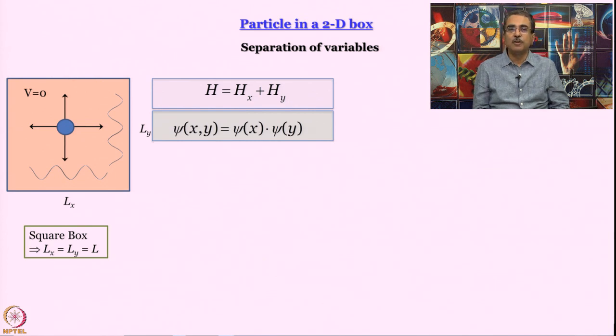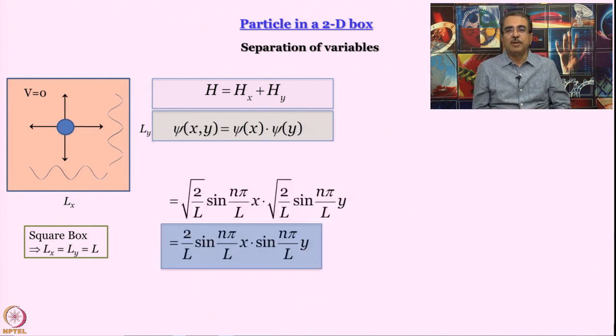Wave function is a product of psi of x and psi of y. The Hamiltonian contains second order derivative operations. So if you take a product, the derivative is the sum. We want the energy to be a sum. Something in x and something in y, they are independent, you cannot add them, you can only multiply them. So when we do that, this is the kind of wave function that we get: root over 2 by L multiplied by sin nx pi x by L multiplied by root over 2 by L sin ny pi y by L. The constant turns out to be 2 by L sin nx pi x by L sin ny pi y by L.